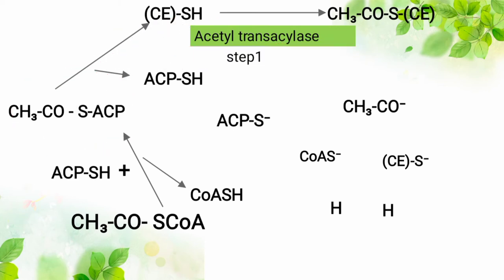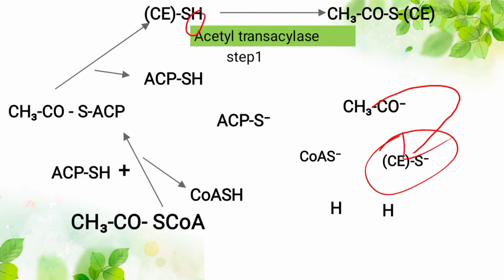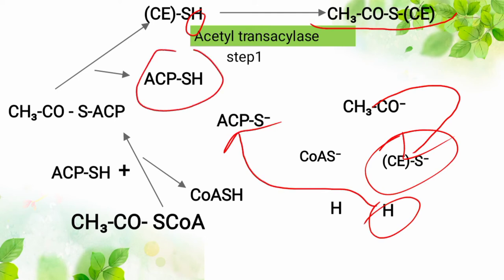The acetyl group is given to the condensing enzyme. We remove the hydrogen from the condensing enzyme's thiol group, meaning that thiol group is now looking for one electron. Then we give it the acetyl group — the acetyl group is looking for one electron too. So now you have acetyl-condensing enzyme formed, and the hydrogen that was removed is given back to ACP, restoring its thiol group.